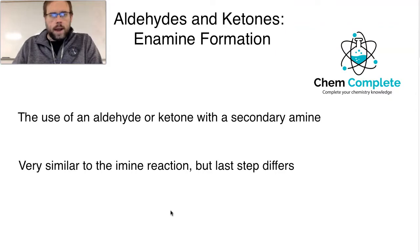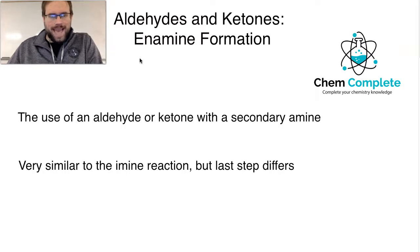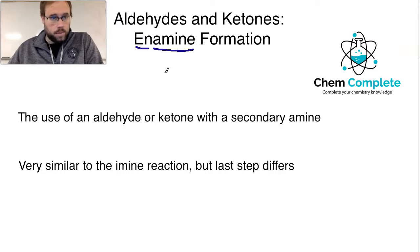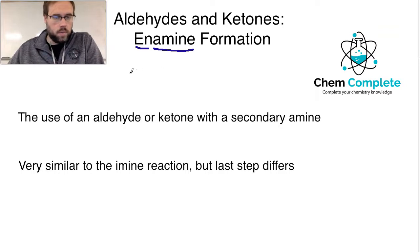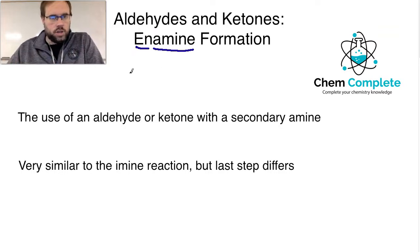For aldehydes and ketones, when we talk about the enamine reaction, the name itself — the 'EN' stands for alkene, as in double bond, and then 'amine' is an amine type of functional group, the nitrogen-based functional group that we are familiar with. So the product is really going to be a combination of both an alkene and an amine together, and that's where the name comes from.